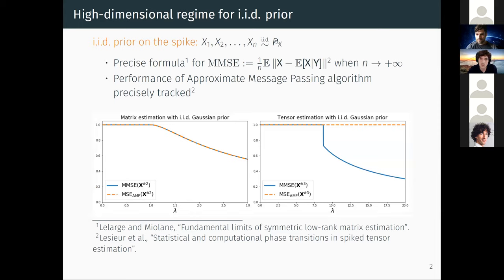The question is: how can you estimate the spike x or the underlying rank-one tensor? This problem is well studied, both information-theoretically and algorithmically, especially for a spike whose components are i.i.d. with respect to some prior distribution p_x. Lesieur and collaborators proved a formula for the minimum mean squared error (MMSE) in the high-dimensional regime, and also studied the approximate message passing (AMP) algorithm, whose performance is tracked by the state evolution equations.